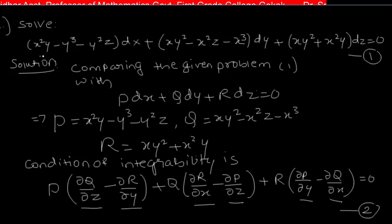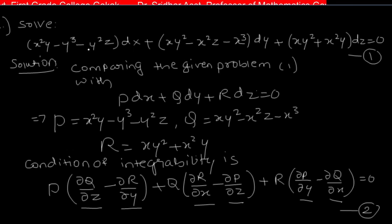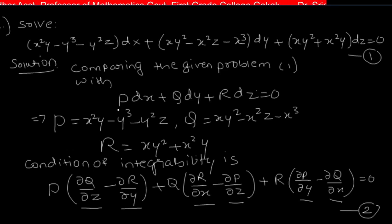Good afternoon everybody. Today we solve one more problem on integrability of an equation. The problem is: solve x²y - y³ - y²z dx + xy² - x²z - x³ dy + xy² + x²y dz = 0. This is the given problem, call this equation as one.